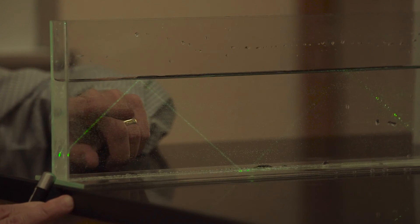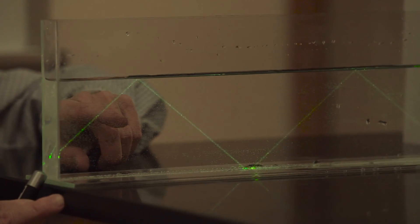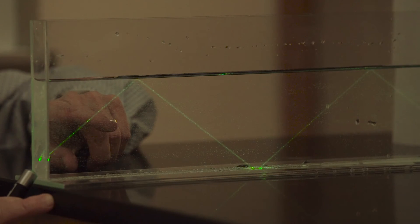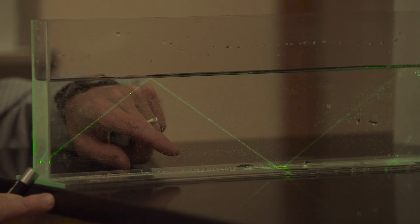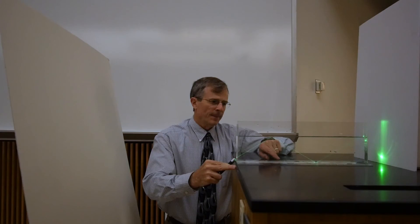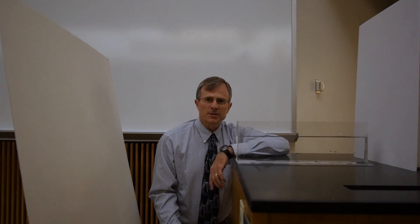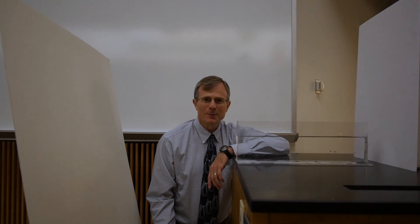And that reflected beam gets more and more prominent as I move toward that critical angle. And then once I hit the angle, then that beam becomes very prominent. So that's total internal reflection, and thanks very much.